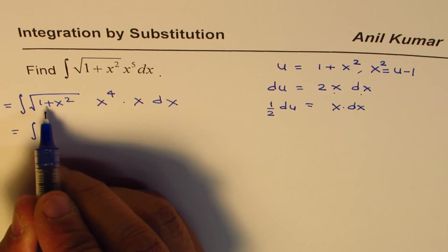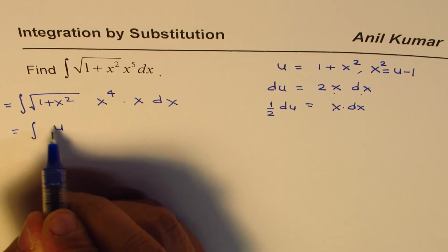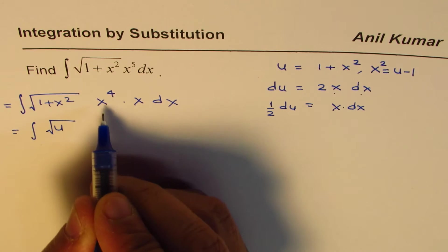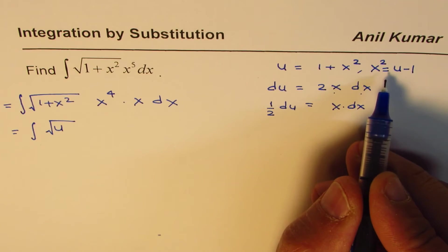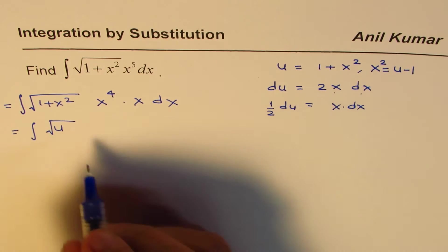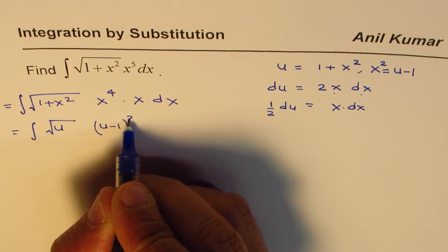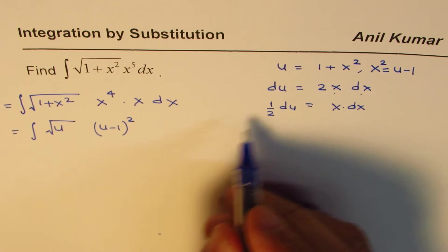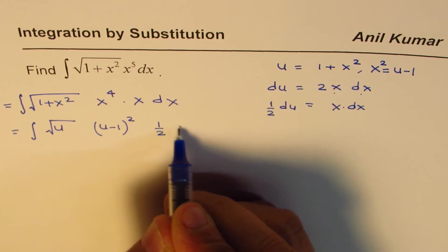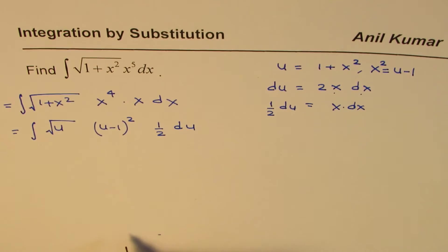So we now have integral of u square root, x to the power of 4 means x squared squared, that means u minus 1 whole squared, and x dx becomes half du.